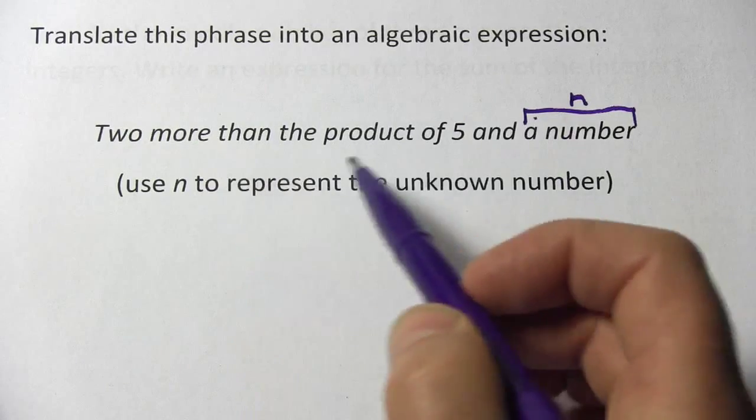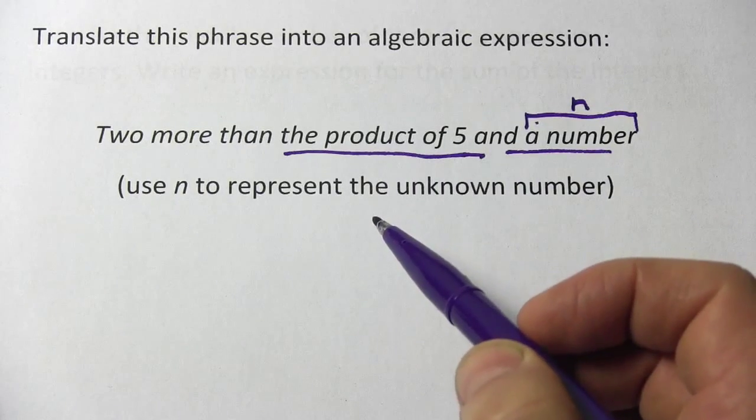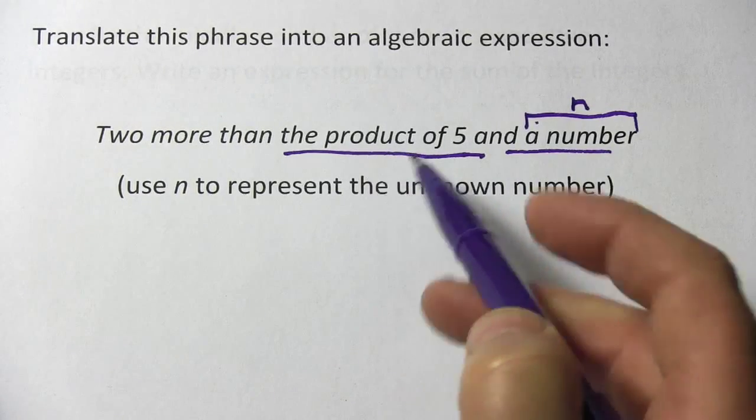And this says two more than the product of five and a number, so let's look at the product of five and a number first. Well, product, that means multiply.